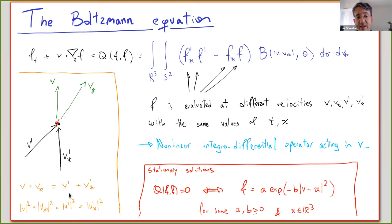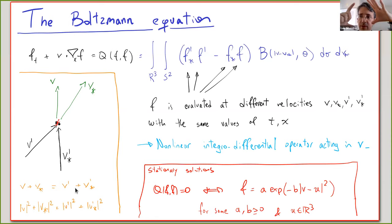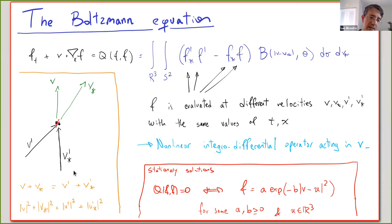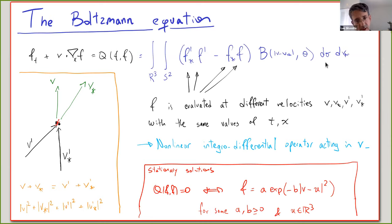After a collision, we cannot fully predict the resulting velocities, but by conservation of momentum the sum of velocities remains constant, and by conservation of energy the sum of squares of velocities remains constant. These two constraints mean v' and v'* are the endpoints of a diameter of the same sphere on which v and v* also form a diameter — so these four velocities are four points on a sphere. This parametrization by a spherical variable gives the full double integral that is the Boltzmann collision operator.